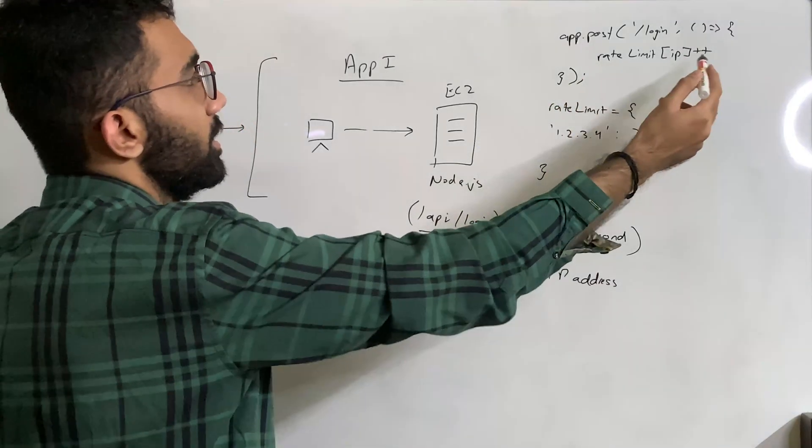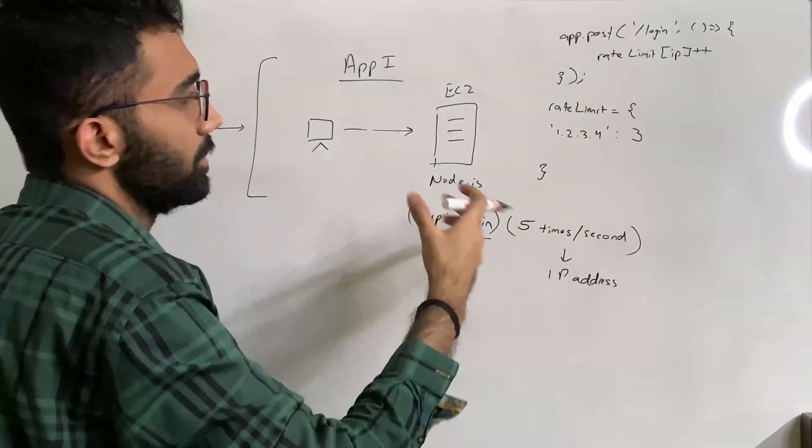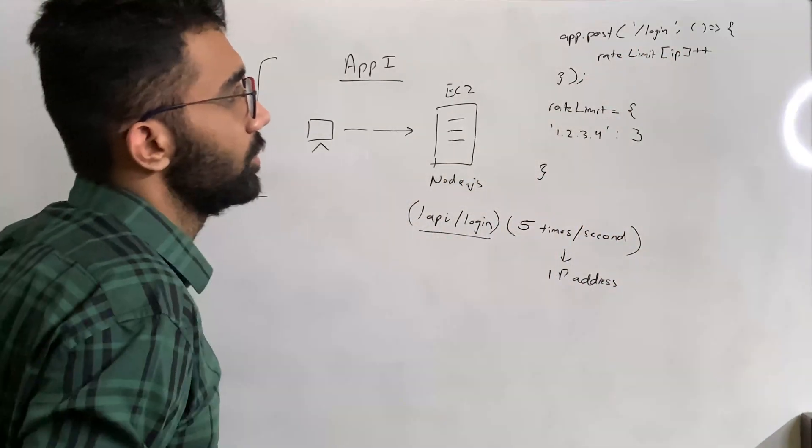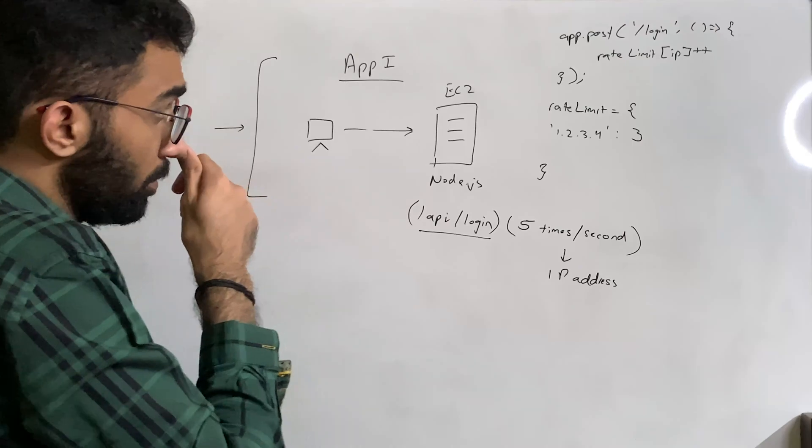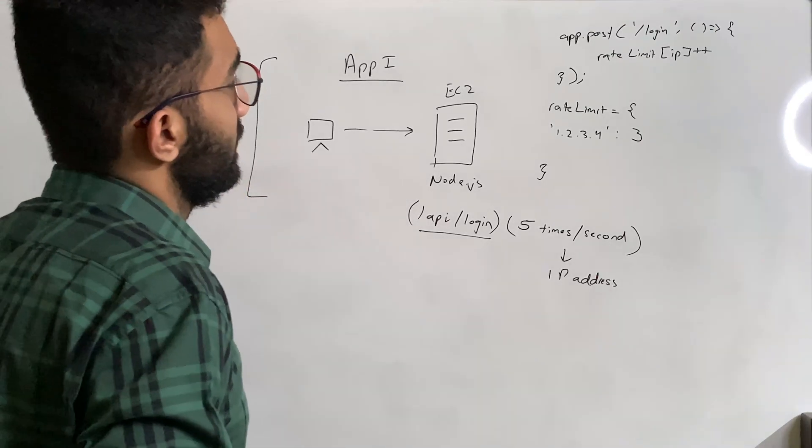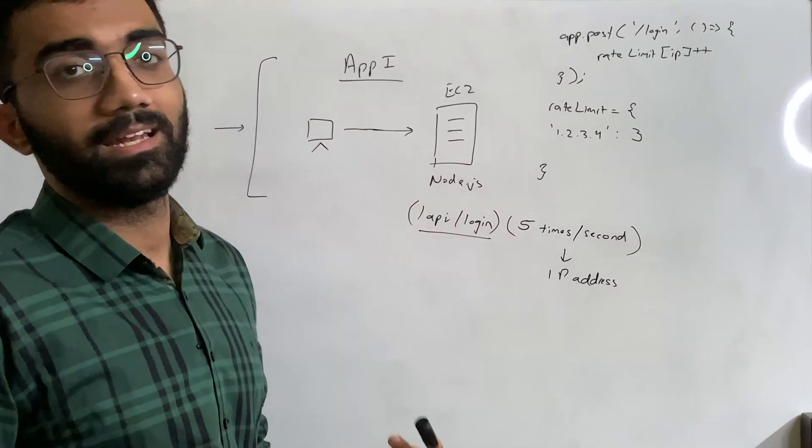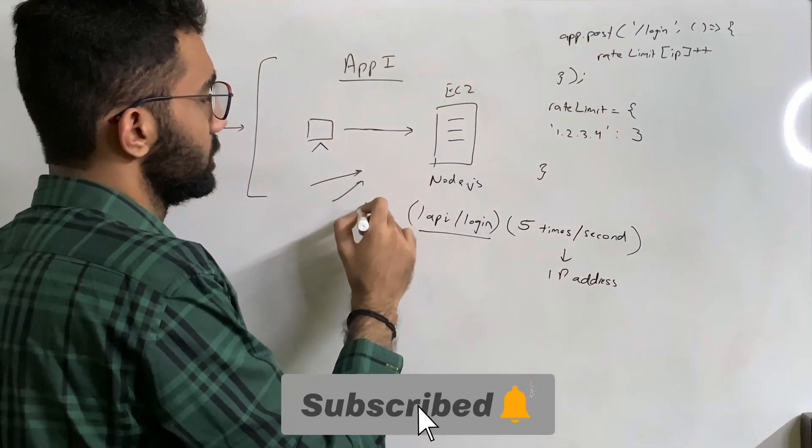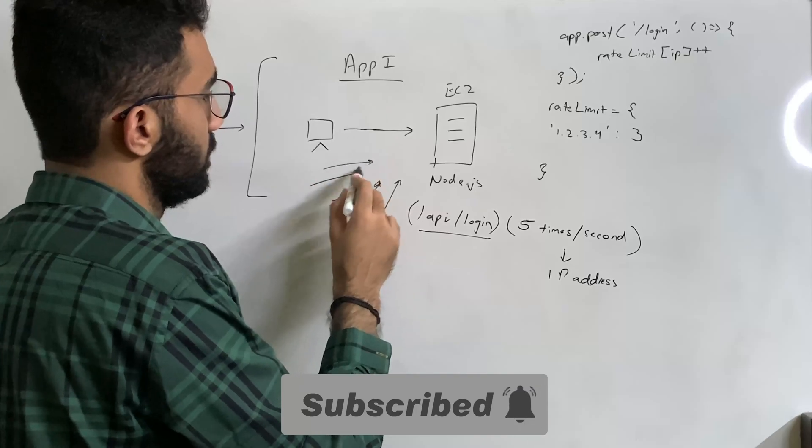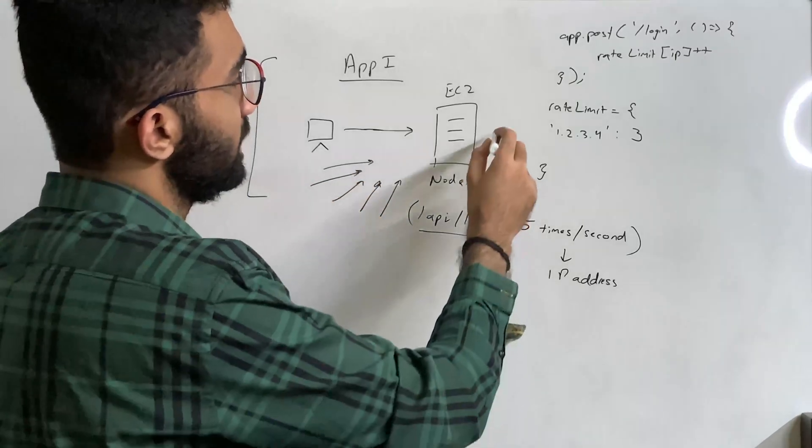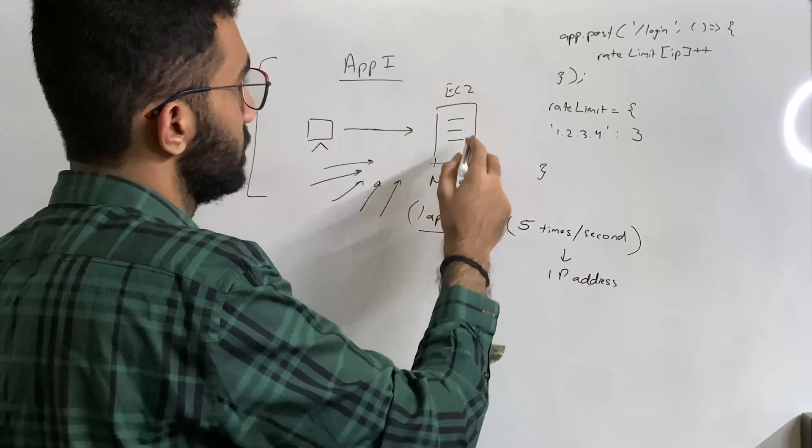And if you just check here, if the rate limit is more than that, then you reject the request, or you just send a 403 or something. Now the problem with this application is let's say that your app becomes very successful. And now you want to scale it, let's say you're getting tens of thousands of users now trying to log into your application. Now the problem here is when you try to scale it, let's say you have a different server.